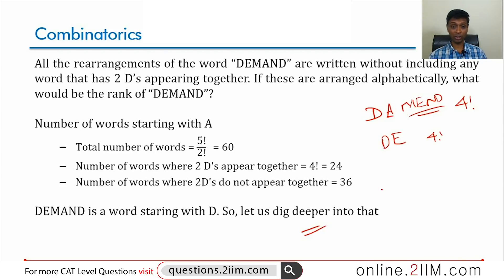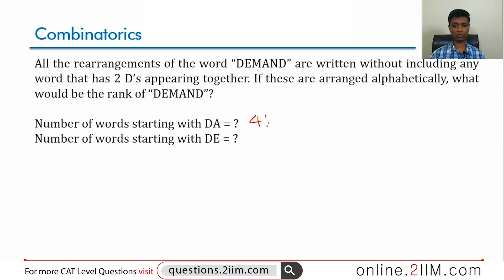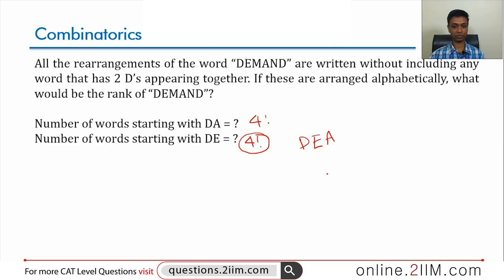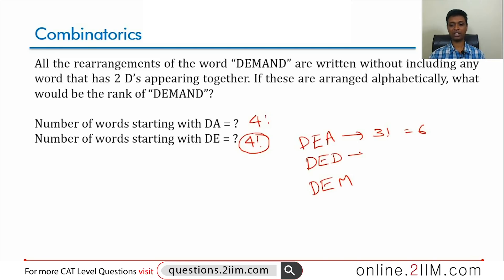Words starting with D-E: there are four factorial words, but DEMAND is within this set so we dig deeper. Within D-E, the next letter alphabetically is A (giving D-E-A), then D (giving D-E-D), then M. Words starting with D-E-A: three factorial, or 6 words. Words starting with D-E-D: three factorial, or 6 words. So D-E-A and D-E-D together give 12 words before we reach D-E-M.